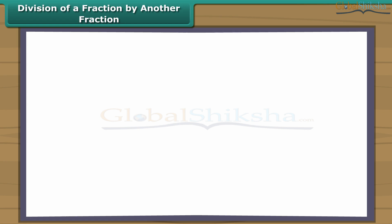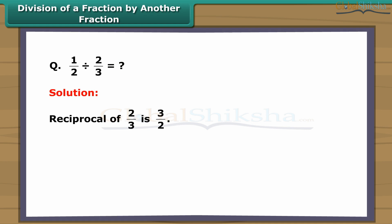Division of a fraction by another fraction. Can you find one-half divided by two-thirds? The reciprocal of two-thirds is three-halves. Thus, one-half divided by two-thirds equals one-half multiplied by three-halves, which equals three-fourths. Remember, the division sign changes to multiplication as soon as the number on the right side is replaced by its reciprocal, while the number on the left side remains unchanged.